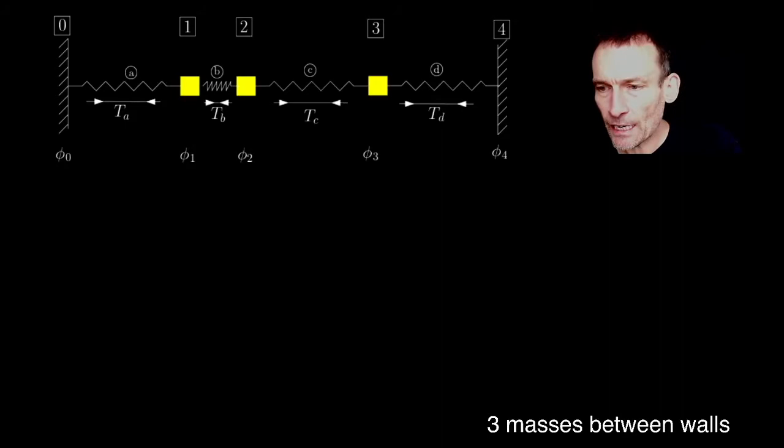Okay, well let's keep going. Let's go a bit further, shall we? Let's add a mass and a spring. So now in our graph, we've extended our graph, we've got five nodes: 0, 1, 2, 3,